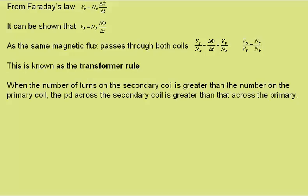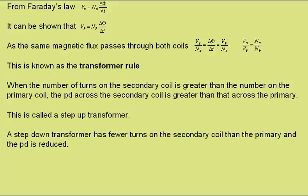When the number of turns on the secondary coil is greater than the number on the primary coil, the potential difference across the secondary will be greater than that across the primary — this is called a step-up transformer. A step-down transformer has fewer turns on the secondary coil than the primary, and the potential difference will be reduced.